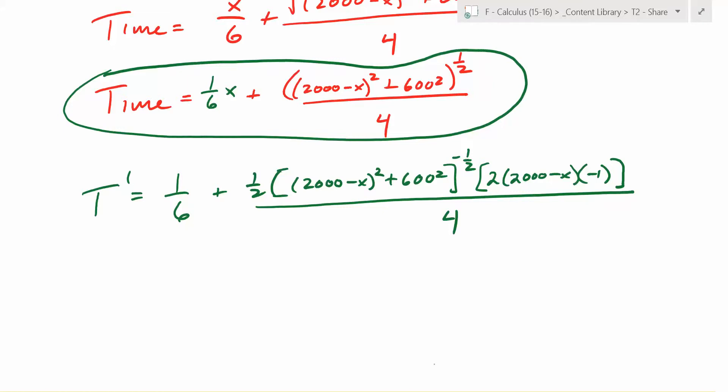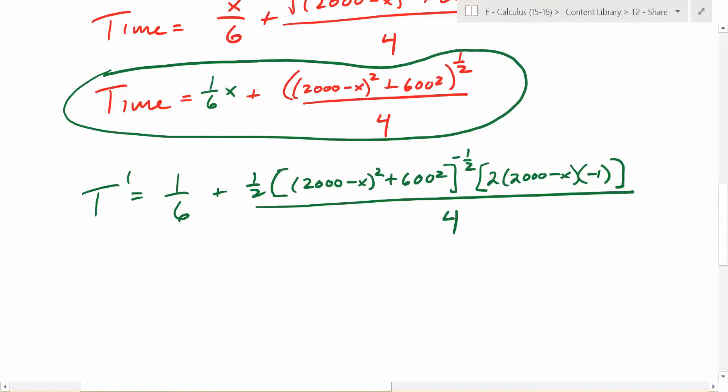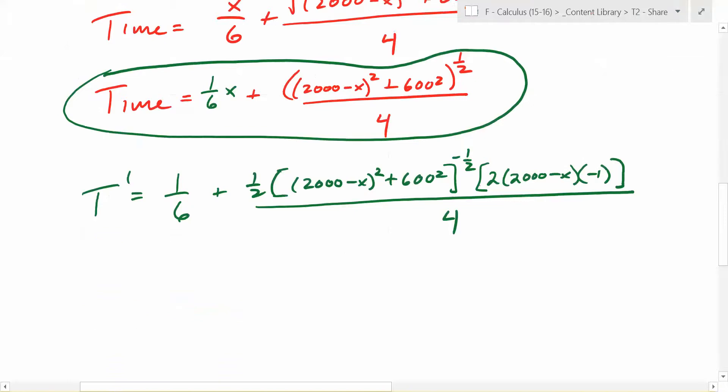Now, before we work with this algebraically, what should we do to this? One word. Begins with an S. Yeah, let's simplify it a little bit. So, for example, Lizzie, that one half, what can we do with that one half that's up front? Well, there's a two right there, and that goes away, right? And then there's that negative one that can go to the front.